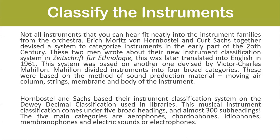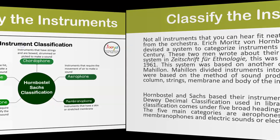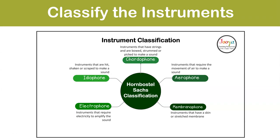Not all instruments fit neatly into the orchestra families. Erich Moritz von Hornbostel and Curt Sachs devised a system to categorize instruments in the early 20th century, later translated into English in 1961. This system was based on one devised by Victor Charles Mahillon, who divided instruments into four broad categories based on the method of sound production — moving air column, strings, membrane, and the body of the instrument. Hornbostel and Sachs based their classification on the Dewey Decimal system, resulting in five main categories and almost 300 subheadings.